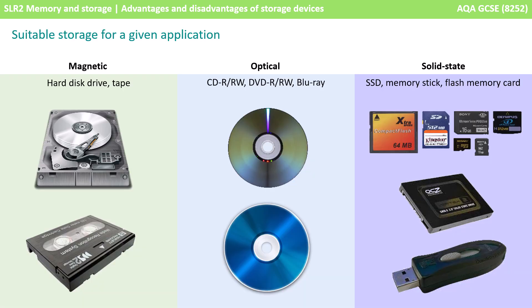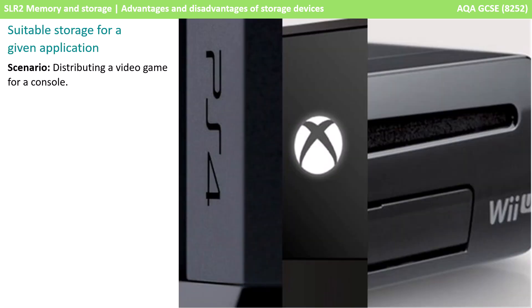A third type of secondary storage is optical storage, including CDs, DVDs, and Blu-rays. In the exam you might be given quite an outdated example — this is the reason it has been removed from the newer specification. But if you are taking the exam in 2026, you might be given a situation of a video game console or distributing a new song album, which are typically situations where the expected answer is an optical medium.